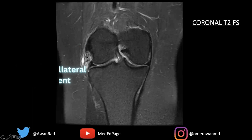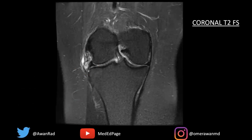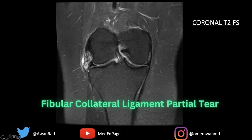Notice that this ligament is very abnormal. There's a lot of edema around it. There's actually T2 bright fluid that's disrupting at least part of the ligament itself, indicating at least a partial tear, if not a complete tear. So the answer here is a fibular collateral ligament partial tear.